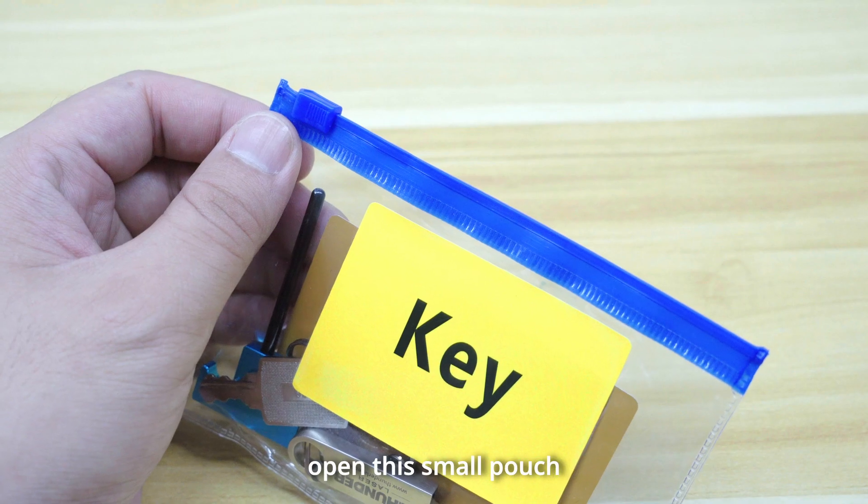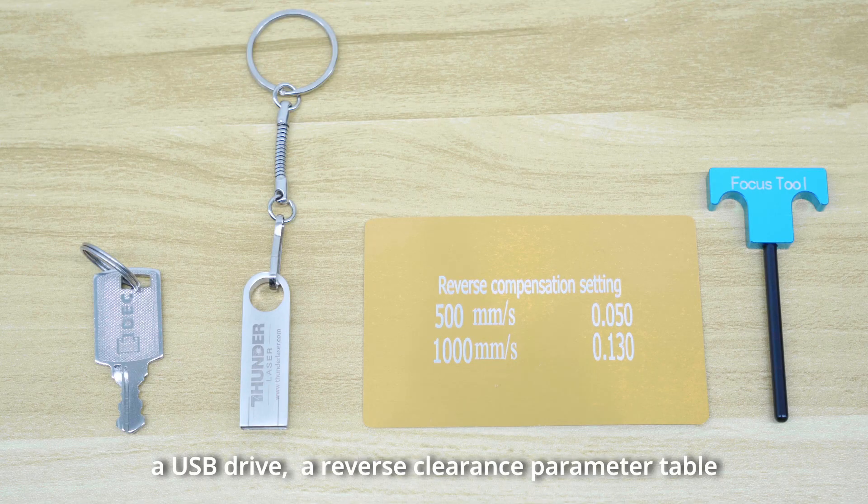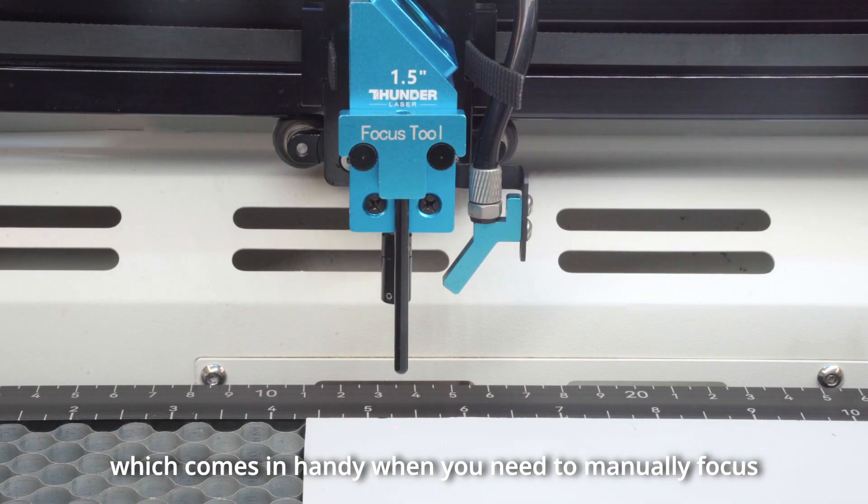Keys and focus tool, open this small pouch. Inside you'll find a key, a USB drive, a reverse clearance parameter table, and focus tool. This is the focus tool, which comes in handy when you need to manually focus.